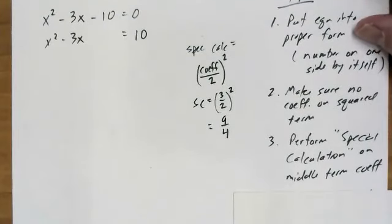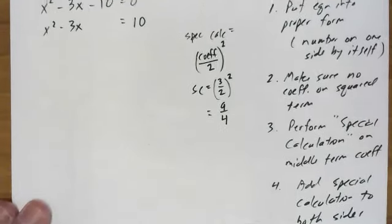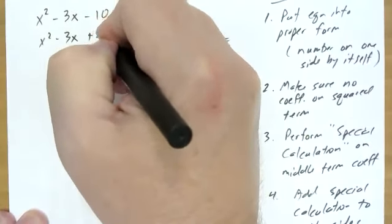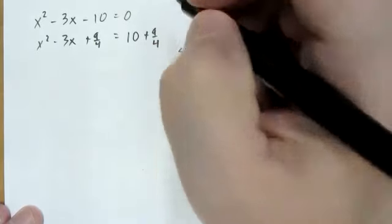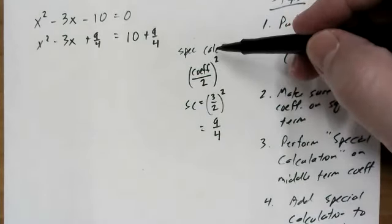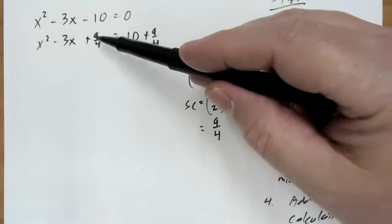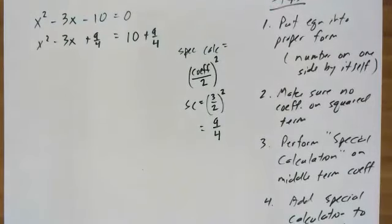Now once I do this special calculation, I'm going to add the special calculation to both sides. So I take this number and I'm going to add it to the left-hand side. But of course, if you do something to one side of the equation, you have to do the same thing to the other side. So I'm going to add 9 fourths to both sides. The reason this special calculation works is that I've got a trinomial here, and as it turns out, this trinomial is actually going to be a perfect square trinomial.